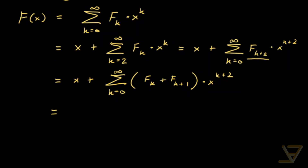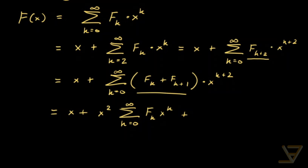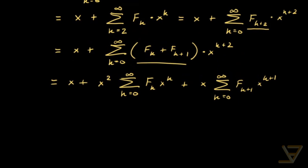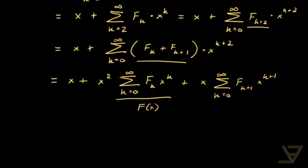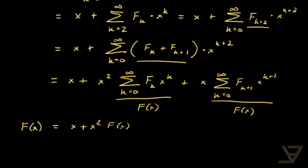Then we can pull this sum apart. We get x plus — factoring out x squared for the first part — the sum from k equals 0 through infinity of f(k) times x to the k. And for the second part, factoring out x, we get the sum from k equals 0 through infinity of f(k+1) times x to the k+1. What you should notice is that this first sum is just F(x), and so is the second one, because even though the 0th term is missing, the 0th term is 0. So this is also F(x).